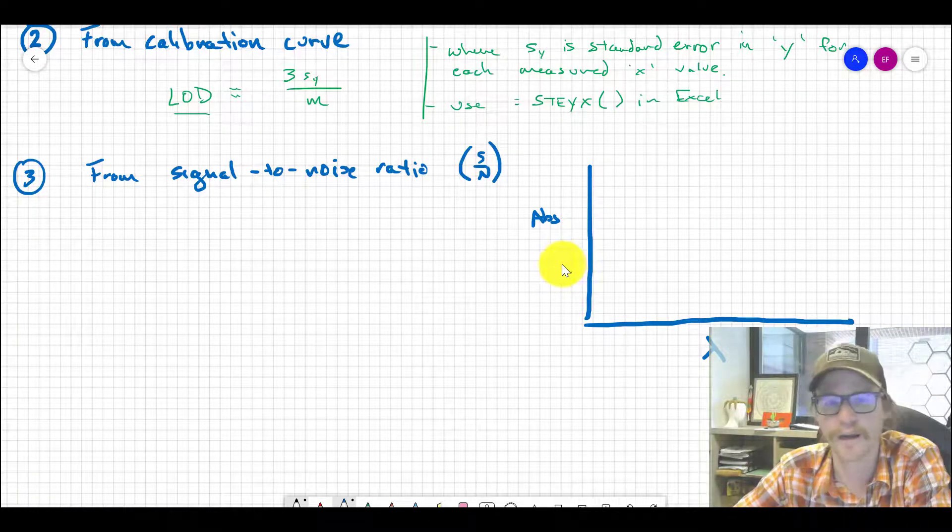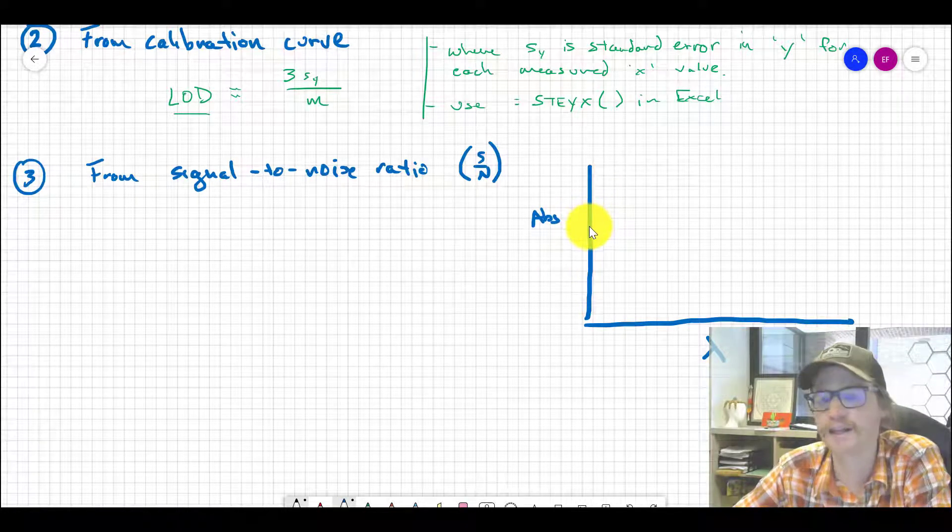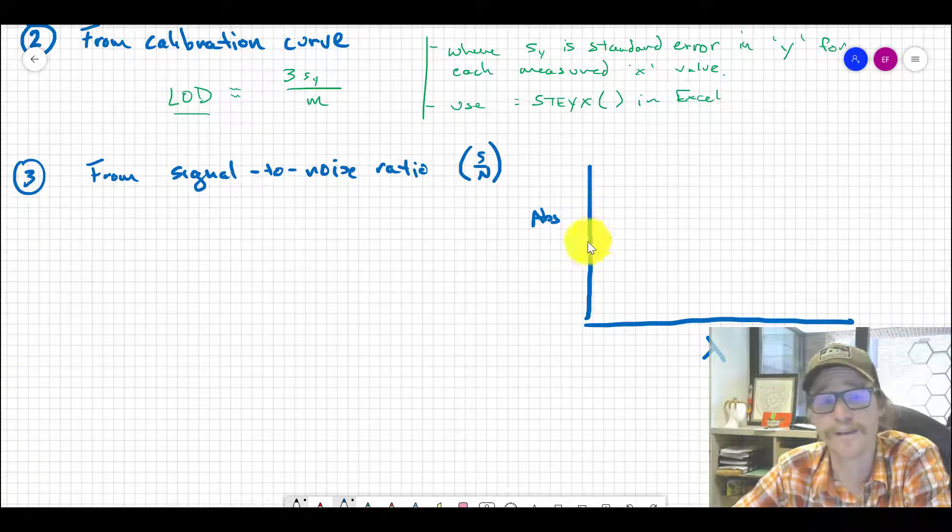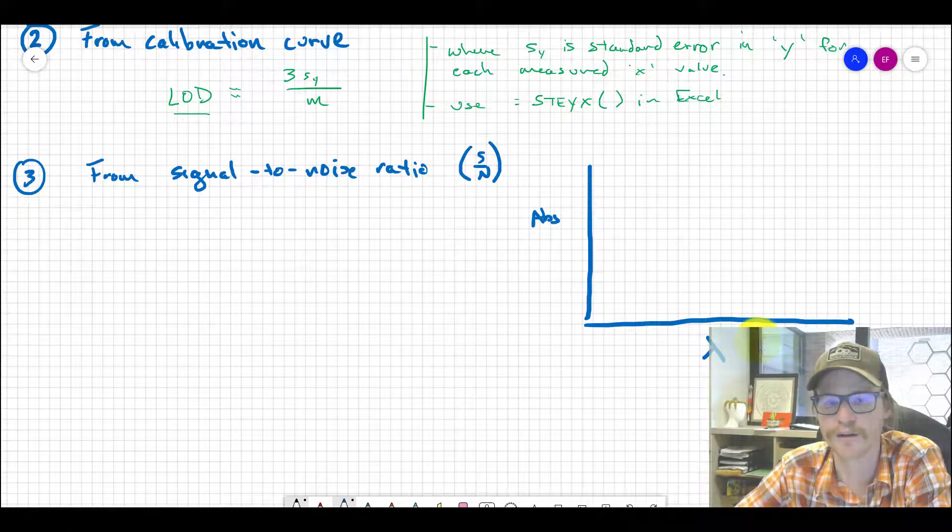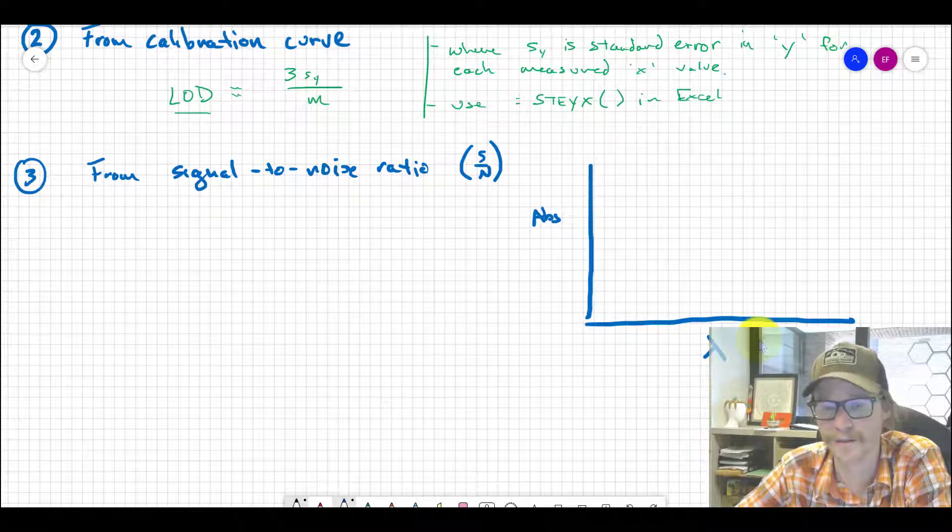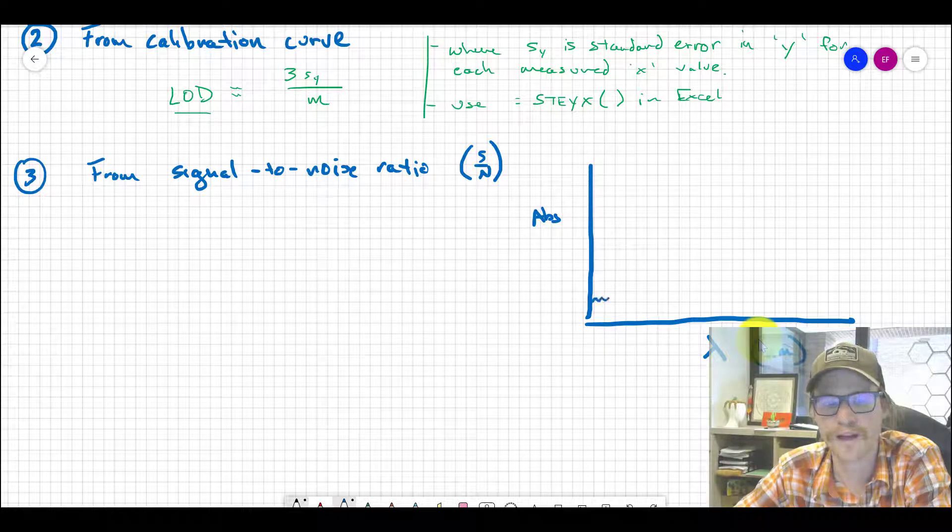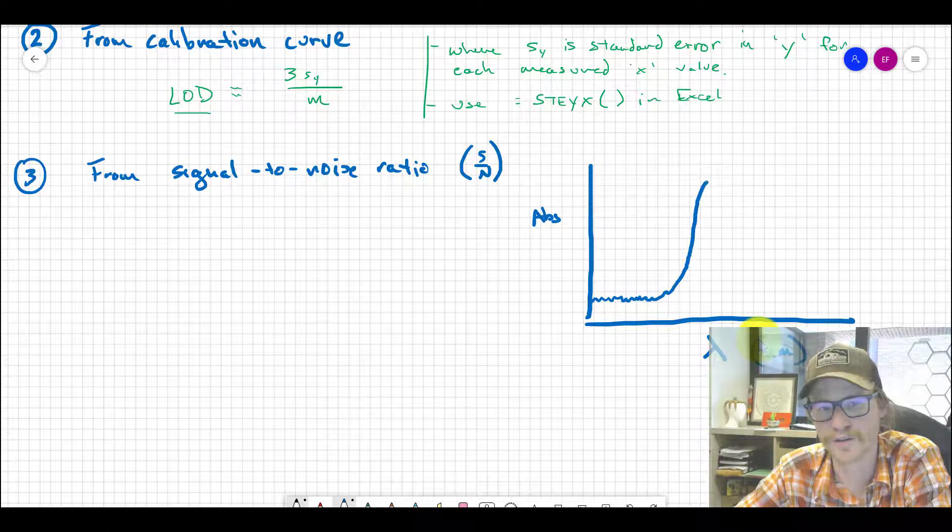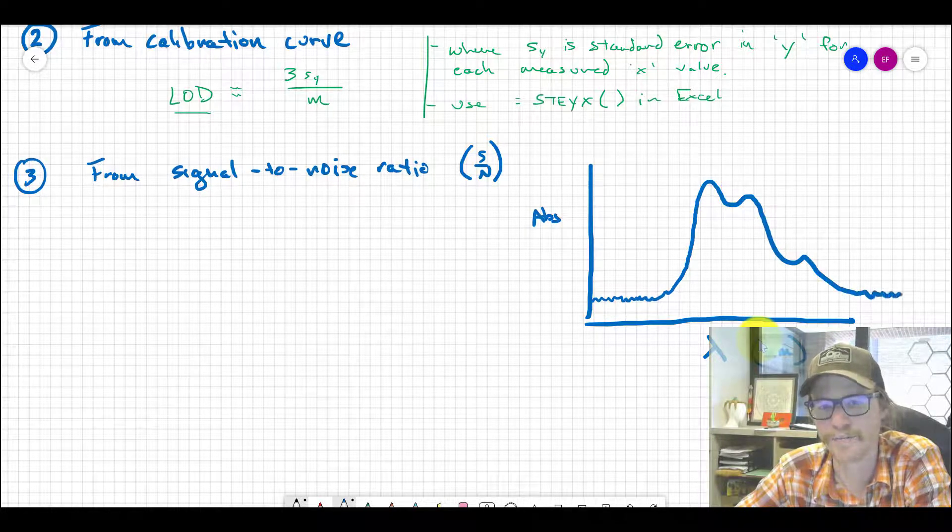If you're collecting an absorbance spectrum of a dye—absorbance versus wavelength in nanometers, not a calibration curve—that might look like a baseline where nothing's happening, then it starts to ramp up where your dye absorbs. Maybe you have a couple absorbance peaks, and then it mellows out and reaches the baseline again.